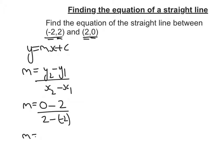So what are we getting? We'll get 0 take away 2 is negative 2. 2 take away negative 2, well, it's the same as 2 add 2, so that's 4. So my gradient is negative half.